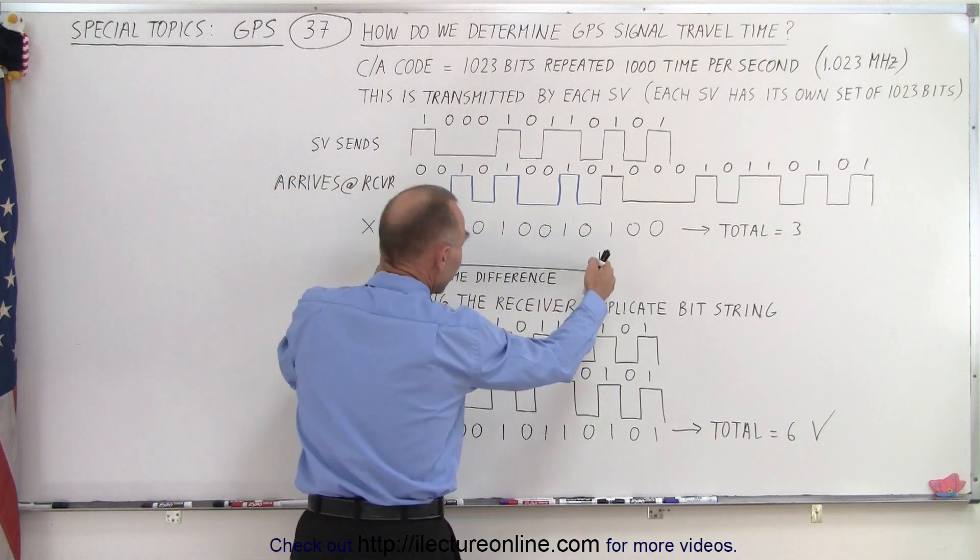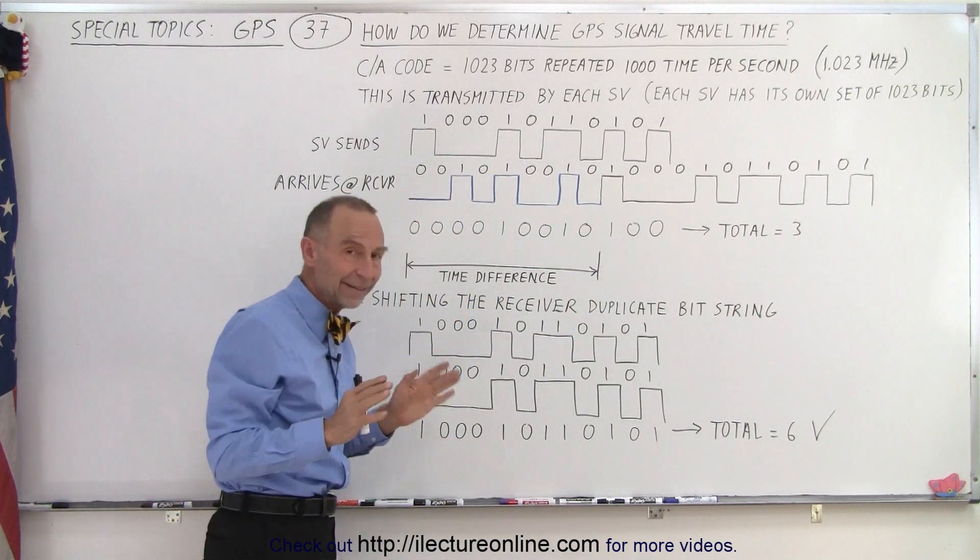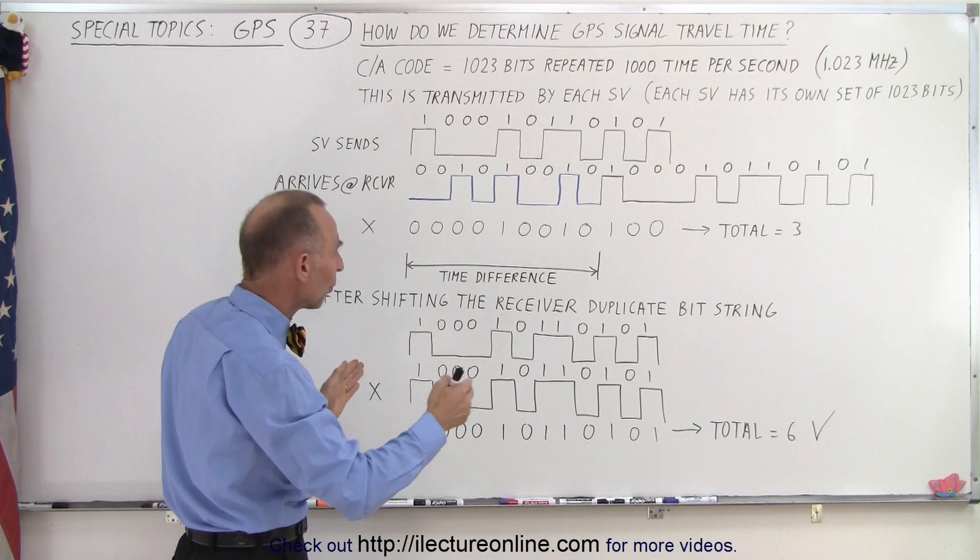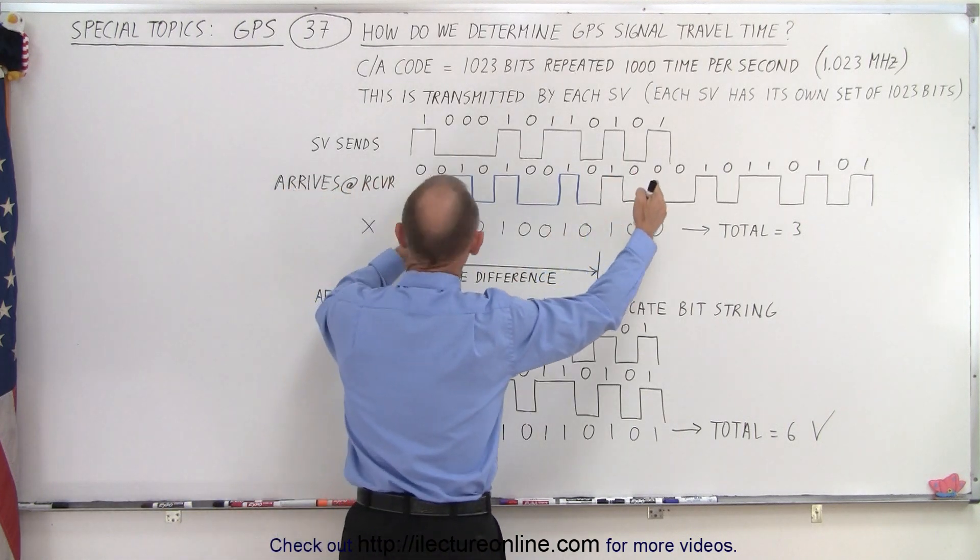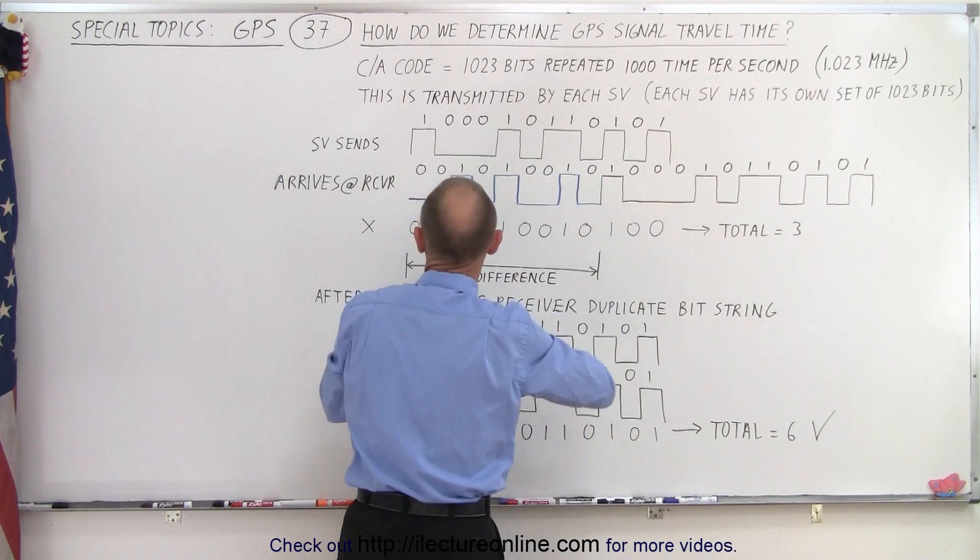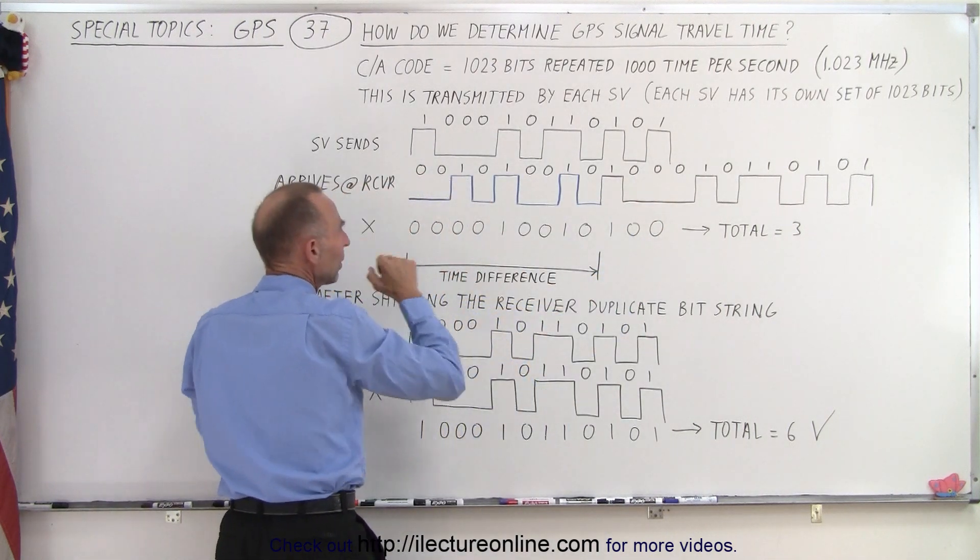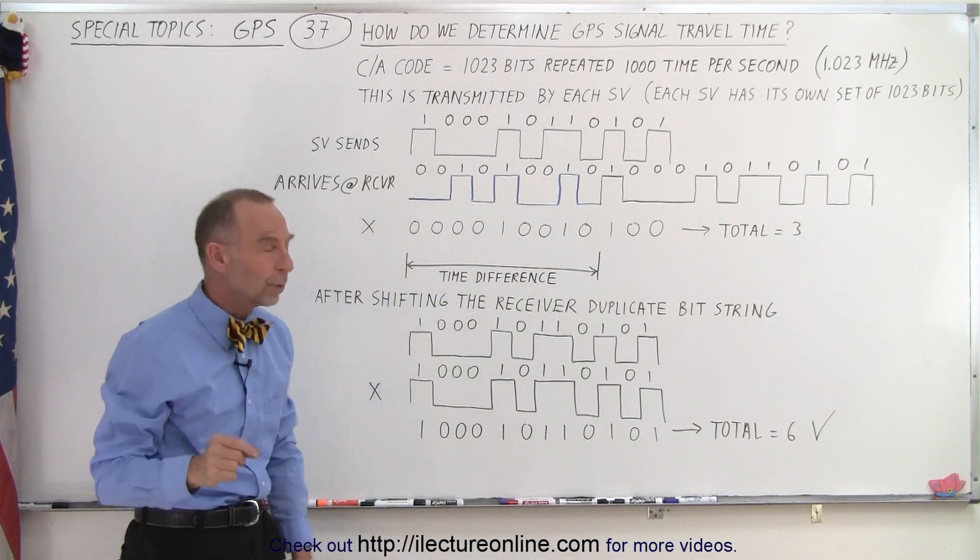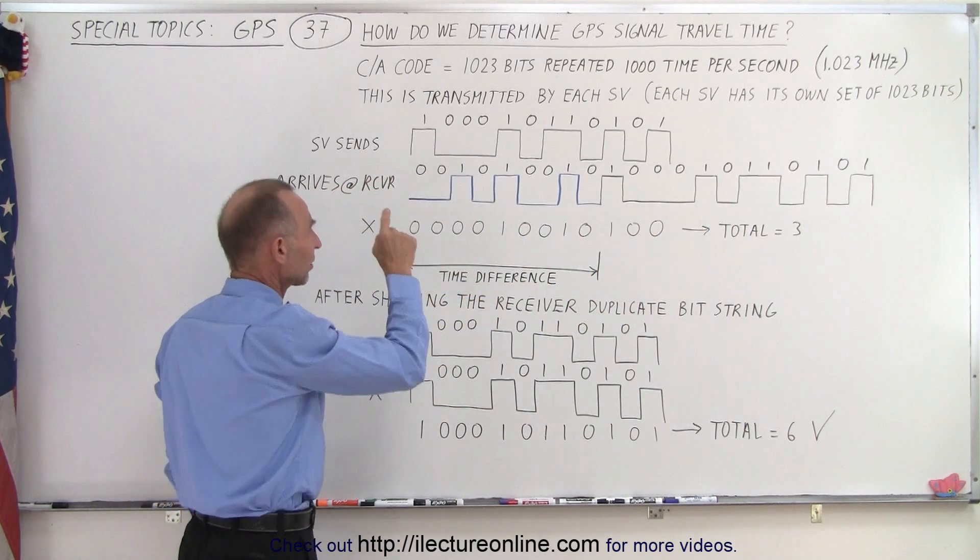Now we of course know that this is the time difference, we wouldn't know that at the time, but we can visually see there's a certain amount of time difference here. So what we then do is we begin to shift the bit string that has been received at the receiver, we then begin to shift that.